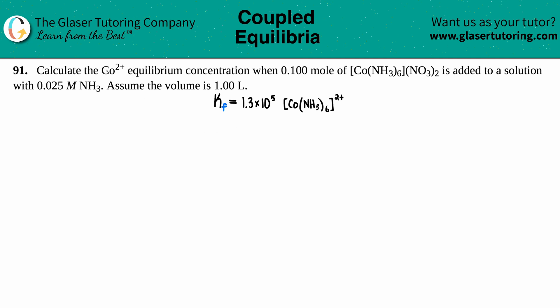Number 91. Calculate the Co2+ equilibrium concentration when 0.100 moles of Co(NH3)6(NO3)2 is added to a solution with 0.025 molarity of NH3. Assume that the volume is 1.00 liters.